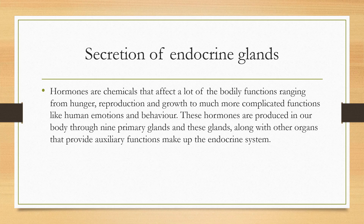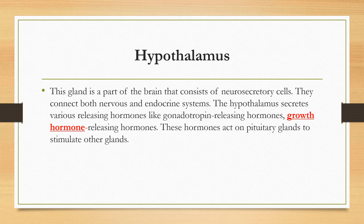The first endocrine gland is the hypothalamus. This gland is a part of the brain that consists of neuro-secretory cells. It connects both the nervous and endocrine systems. The hypothalamus secretes various releasing hormones like gonadotropin releasing hormones. These hormones act on the pituitary gland to stimulate other glands. It also produces releasing hormones and inhibitory hormones.